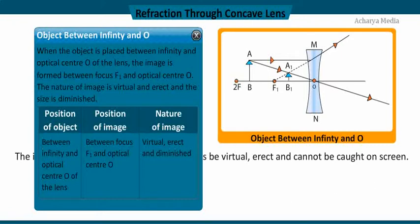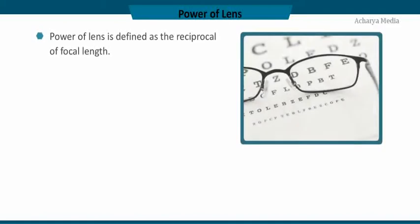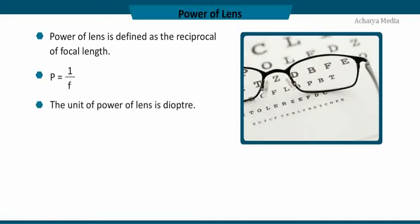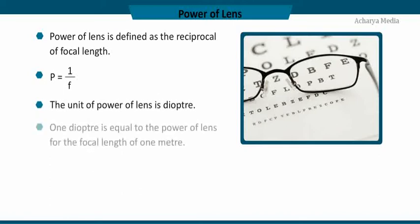The focal length of a lens used for correcting vision is expressed as the power of the lens. Power of a lens is defined as the reciprocal of focal length: P = 1/F diopter. Its unit is the diopter. One diopter is equal to the power of a lens with a focal length of 1 meter.